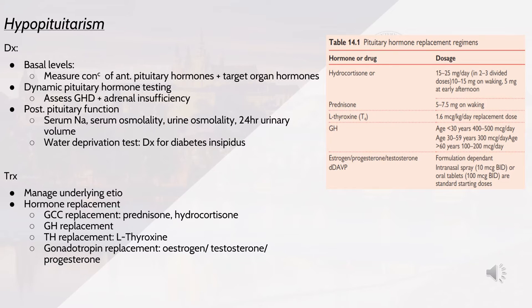Treatment involves managing the underlying etiology and hormone replacement. For example, glucocorticoid replacement can be with prednisone or hydrocortisone. We can also do growth hormone replacement, thyroid hormone replacement with levothyroxine and even gonadotropin replacement with estrogen, testosterone or progesterone.